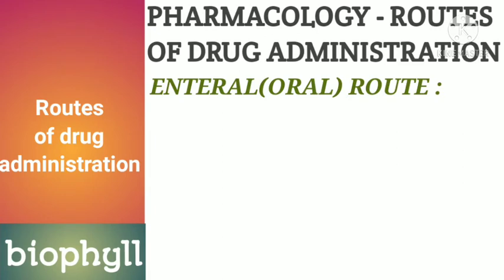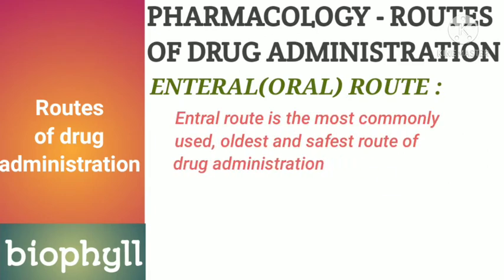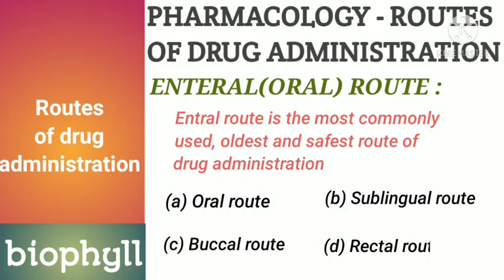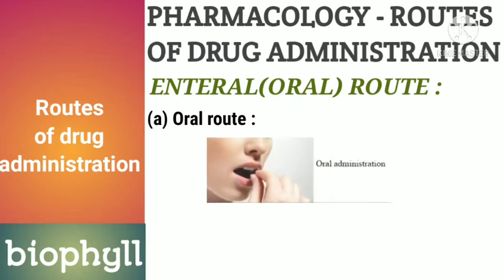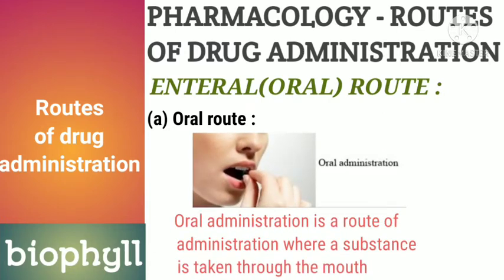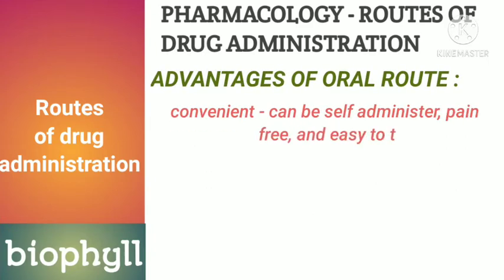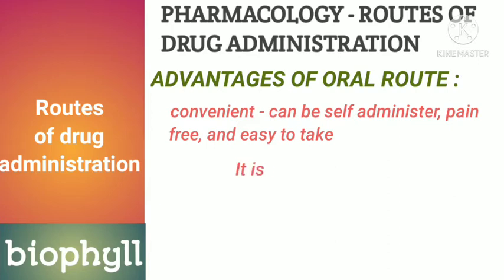First is the Enteral Route. The Enteral Route can be used as a drug administration route and it is the safest route. There are three sub-divisions: Oral Route, Sublingual Route, Buccal Route, and Rectal Route. The first type is Oral Route Drug Administration — the drug is given through the mouth. The advantage is that it is very convenient, we can do self-administration, it is pain-free, it is a safe route, and it is cheap compared to other routes.